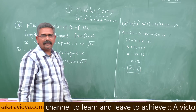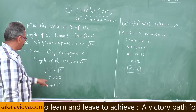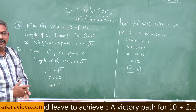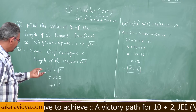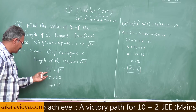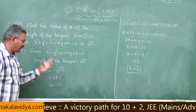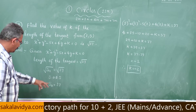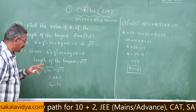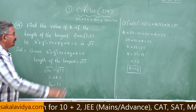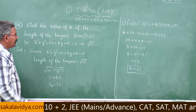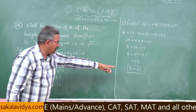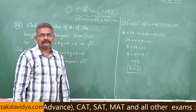So, for problem 14: length of the tangent equals √S₁₁ = √37, therefore S₁₁ = 37. Substituting (2,5), we get K = -2.